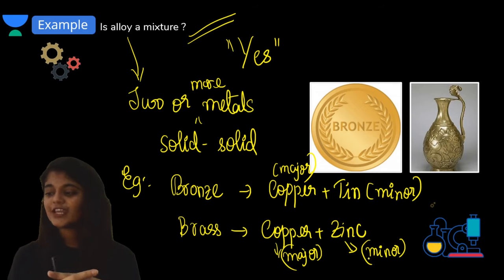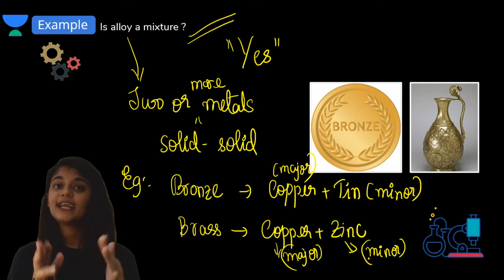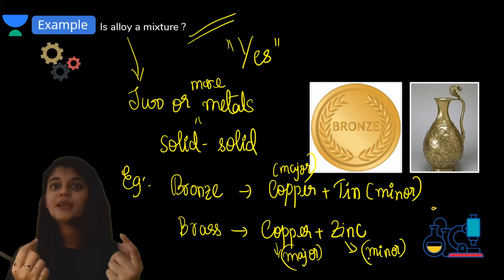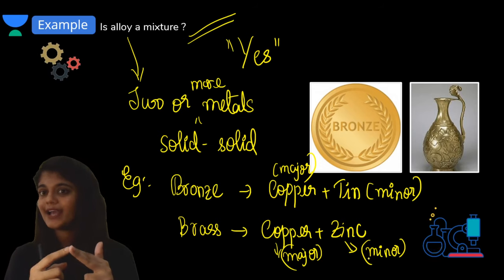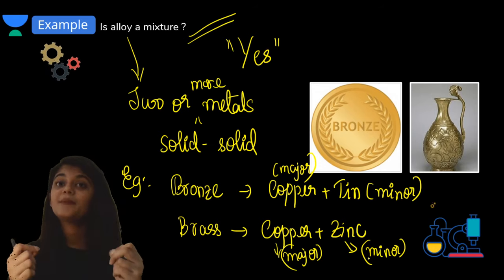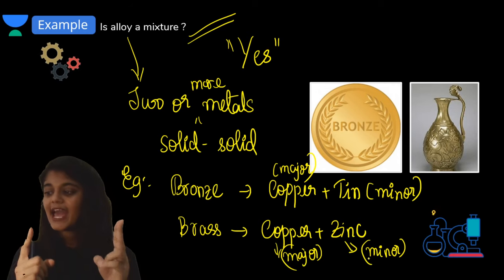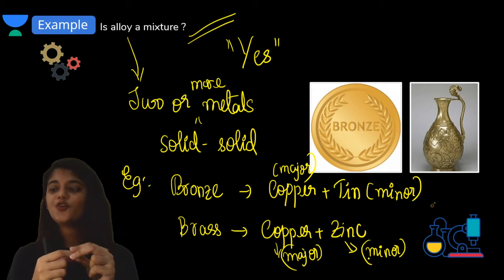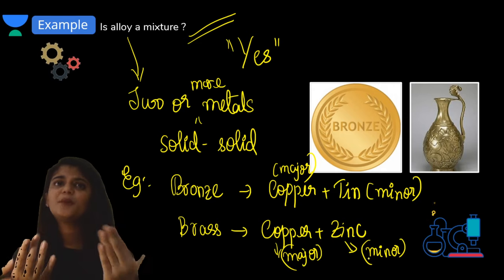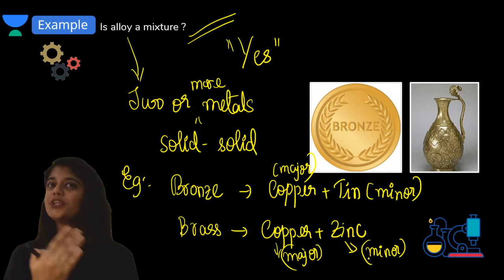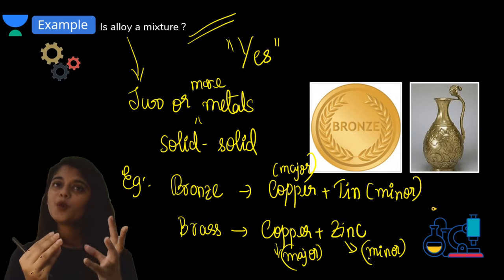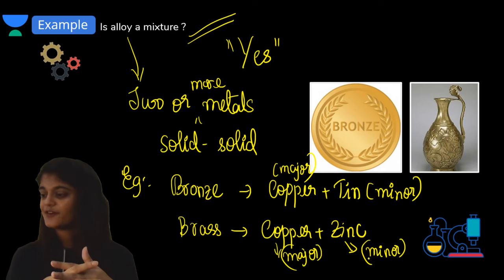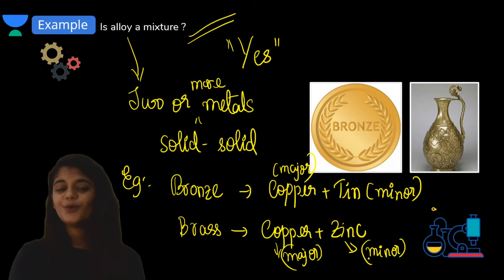Another question: is air a mixture? This was also discussed in the last class. Yes, air is also an example of a mixture because air is made up of different kinds of gases with a fixed uniform composition. Nitrogen is acting as the solvent, as I have already said.